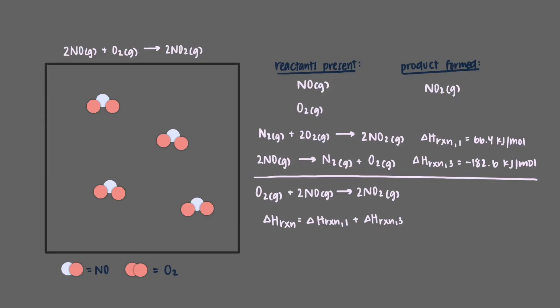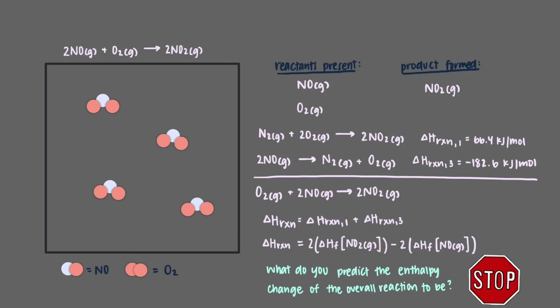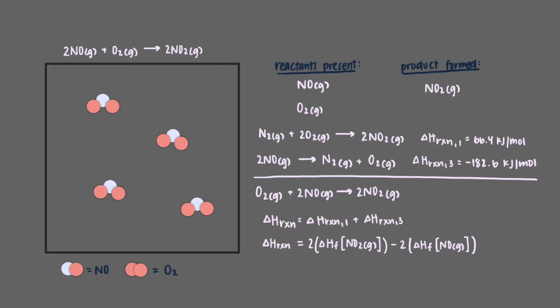In general, this is always the case for any reaction: if you add up all of the enthalpies of formation of the products and then subtract all of the enthalpies of formation of the reactants, you will get the overall enthalpy change of the reaction. So for this reaction, to calculate the delta H of reaction, we take the enthalpy of formation of the products, 66.4 kJ per mole, and subtract the enthalpy of formation of the reactants, 182.6 kJ per mole, to get an overall enthalpy change of negative 116.2 kJ per mole.